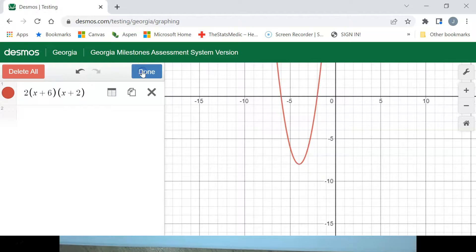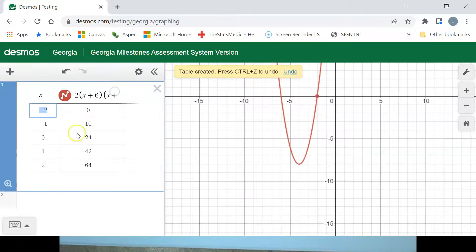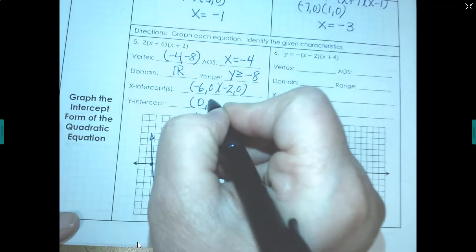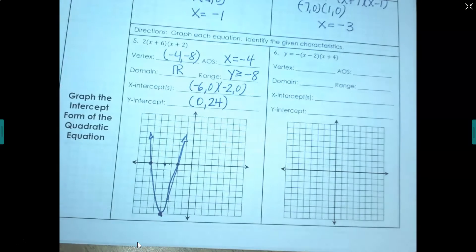So let's go look at our table values. We go to the settings wheel, go to table where x is 0. So my y value there is 24. So that makes my y-intercept 0, 24.